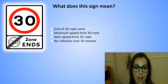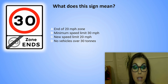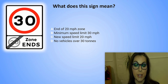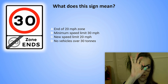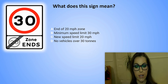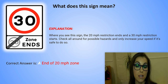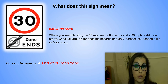What does this sign mean? A. End of 20 mph zone. B. Minimum speed limit 30 mph. C. New speed limit 20 mph. D. No vehicles over 30 tons. The correct answer is A. End of 20 mph zone. Explanation: Where you see this sign, the 20 mph restriction ends and the 30 mph restriction starts. Check all around for possible hazards and only increase your speed if it's safe to do so.